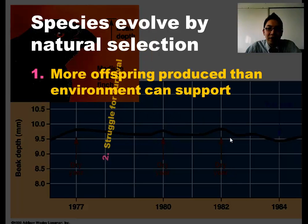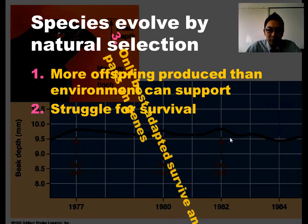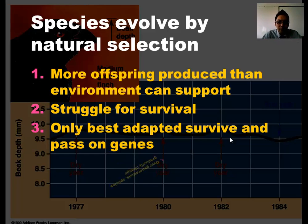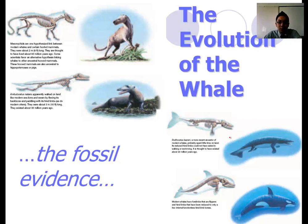Species evolved by natural selection — that's the summary. Some cool things: let's look at the evolution of the whale. Whales live in water, but we call them mammals. That's strange — shouldn't they be like fish? So why do we call them mammals?